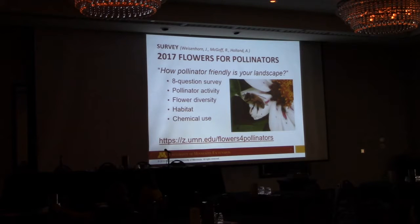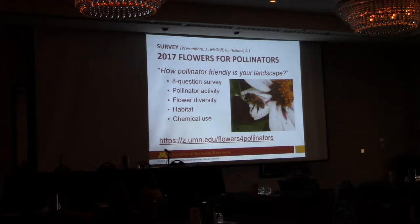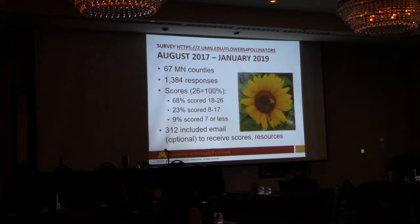Those eight questions dealt with: what insects do you see in your landscape (with pictures to click on), flower diversity — do you plant flowers of different sizes, colors, and bloom times — habitat — do people cut down stems for pollinators, do they encourage pollinator habitat — and ultimately what is their chemical use. We really worked on that question because we didn't want it to be all about pesticide use; we wanted it to be more about what they're actually doing in their landscape.